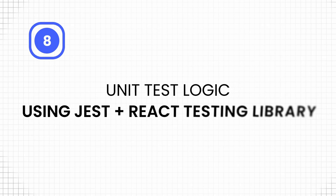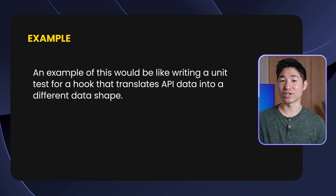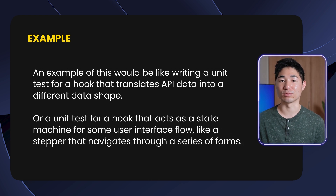Point number eight is to unit test logic using Jest and React Testing Library. My go-to tools are Jest and React Testing Library, which together let you test pretty much anything in React componentry. I recommend focusing your effort on testing logic — for example, a unit test for a hook that translates API data into a different shape, or a hook that acts as a state machine for a UI flow like a stepper navigating through a series of forms.